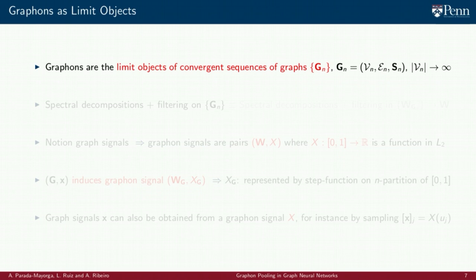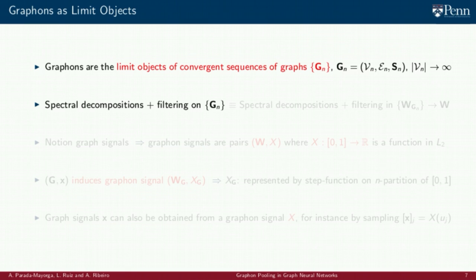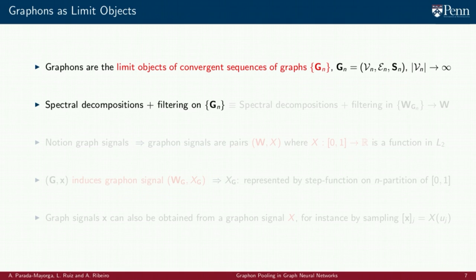Graphons are used as the limit objects of sequences of graphs whose number of nodes and edges grows up to infinity. This is, there are sequences of graphs that converge to a graphon. And this notion of convergence is rooted in convergence of densities of homomorphisms between graphs. That has as a consequence that the spectral decompositions and filtering on the graphs of the sequence are equivalent to the spectral decompositions and filtering on the graphons induced by those graphs and on the graphon limit.